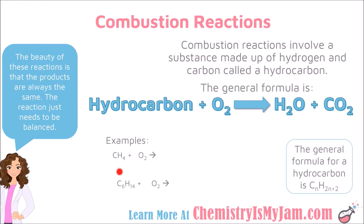This is methane. Methane has one carbon, so in the formula you would plug a 1 in for n. To figure out the number of hydrogens: 2 times 1 is 2, plus 2 is 4. Methane is expected to have 4 hydrogens. This is hexane. Hexane has 6 carbons, so we would be plugging a 6 in for n. 2 times 6 is 12, plus 2 is 14, meaning we expect hexane to have 14 hydrogens.